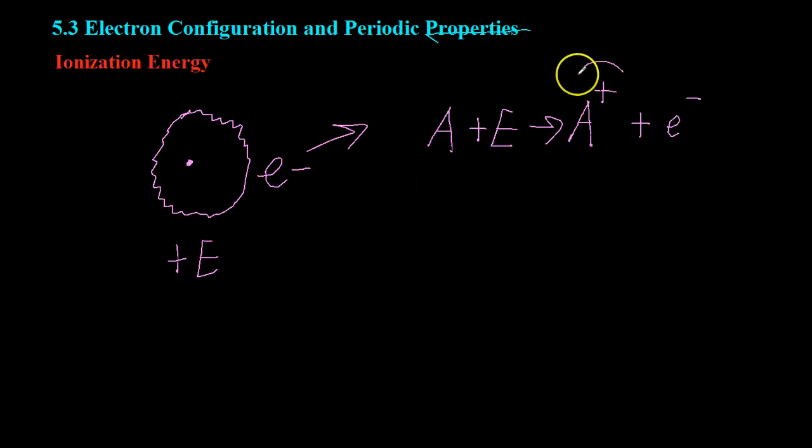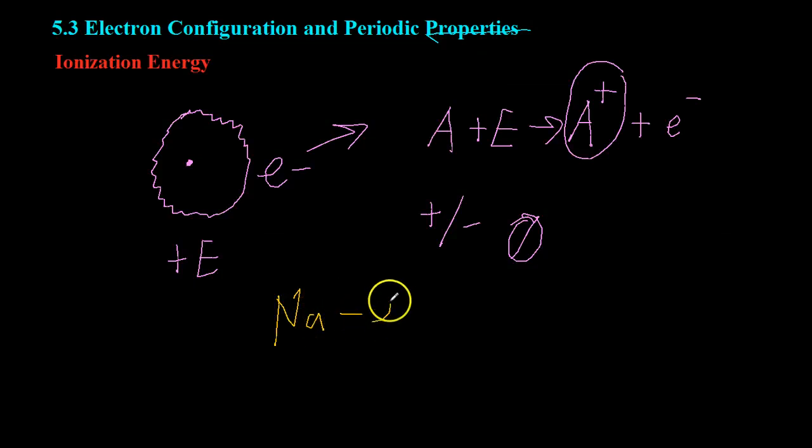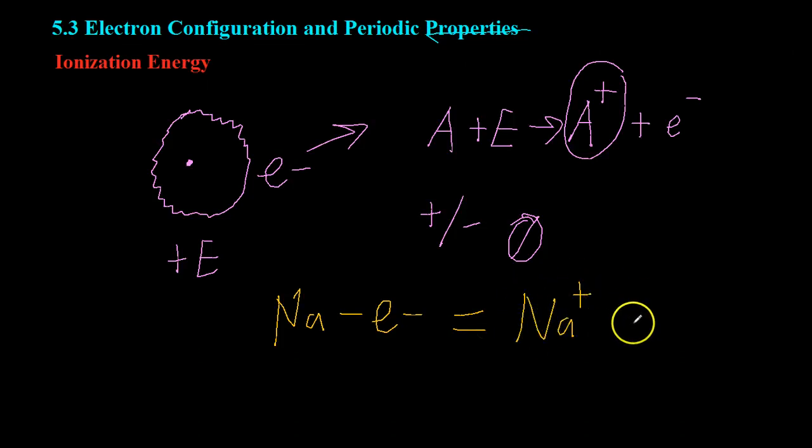Now, an ion, which is what this is called, the A+, is an atom or molecule that has a positive or a negative charge. Basically, it's an atom or molecule that isn't neutral. For example, if you take a sodium atom and then take away one of its electrons, what you'll end up with is the sodium ion, Na+, and the electron out in free space.